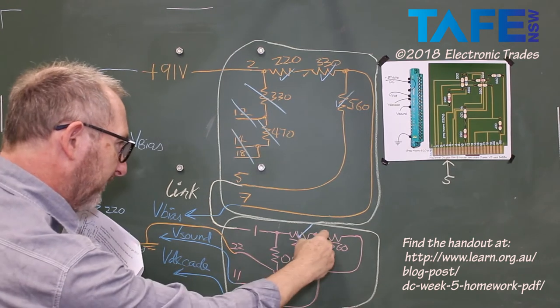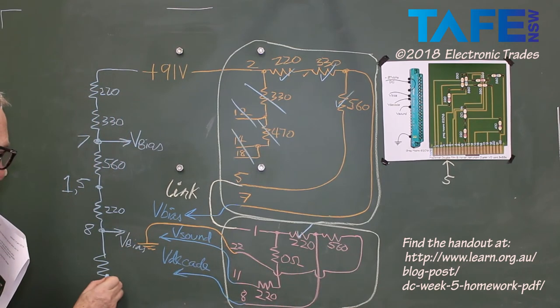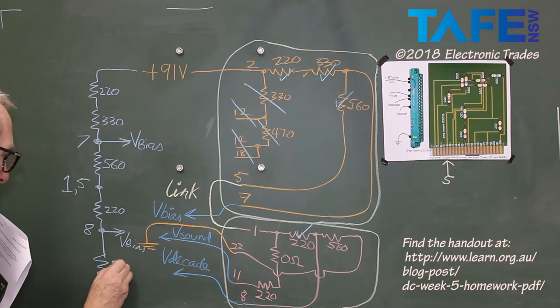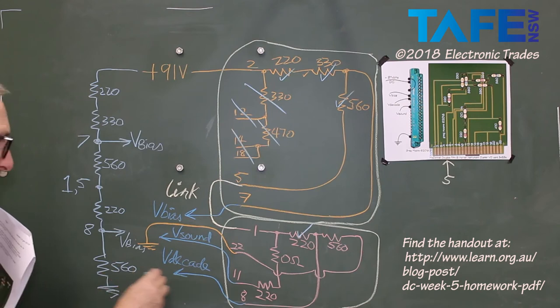220, pin 8, 560 to pin 22. As I know, I remember pin 22 was ground. 560.